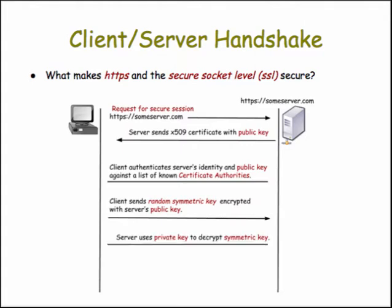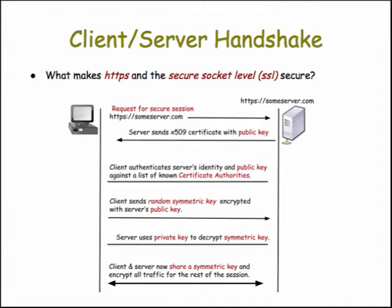The server then uses its private key to decrypt the symmetric key. At this point, both the client and server are sharing a symmetric key, and from then on they can communicate in encrypted messages using that shared symmetric key. All the rest of the traffic between them during this session is done encrypted using that symmetric key.